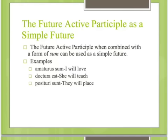The future active participle can also express a simple future when combined with a form of sum as the main verb. For example: amaturus sum means I will love / I shall love / I am going to love / I am about to love. Doctura est means she will teach — notice the participle takes the gender of the subject, so doctura signals a feminine subject. Posituri sunt means they will place / they shall place / they are going to place, and goes to -i because it's plural.